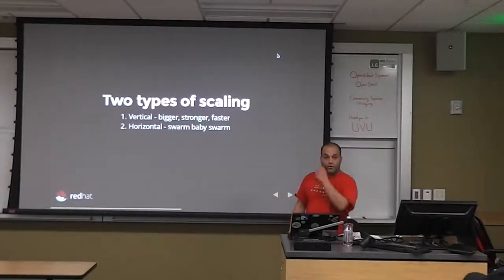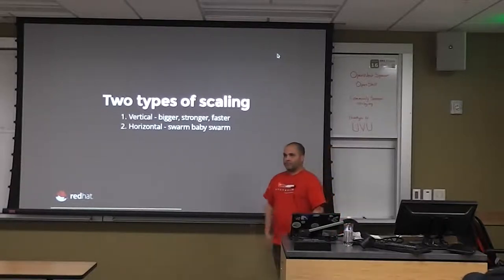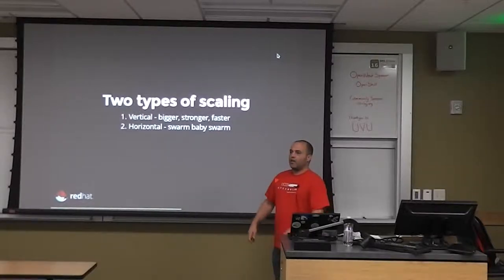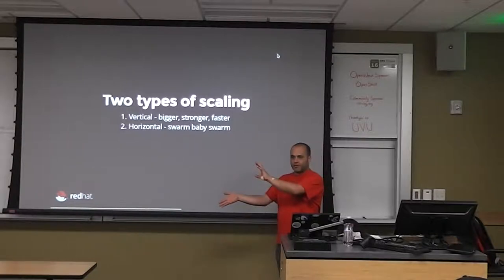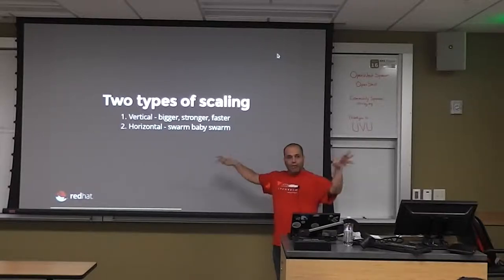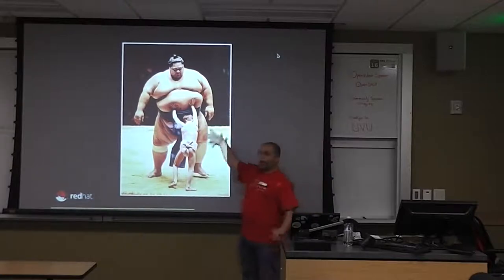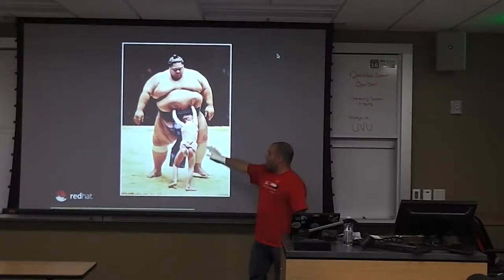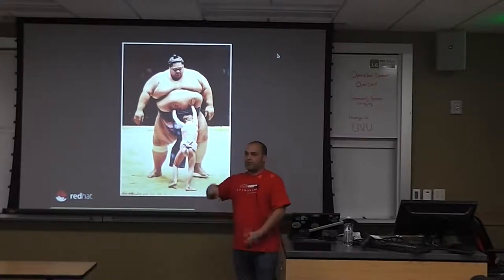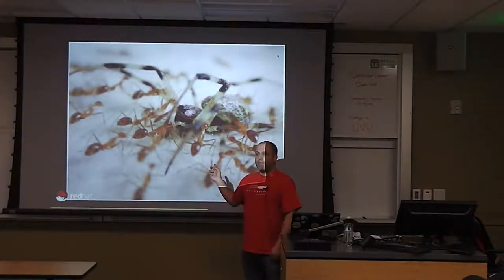Vertical scaling is bigger, stronger, faster. You're running an Oracle database and not getting enough memory? You throw it on a bigger server — add more RAM, drop another CPU in the socket, add a SAN array for disk space. Horizontal scaling is 'swarm, baby, swarm' — like Google: you just keep adding more things. Vertical: you make something bigger. Horizontal: cheap, replaceable parts.